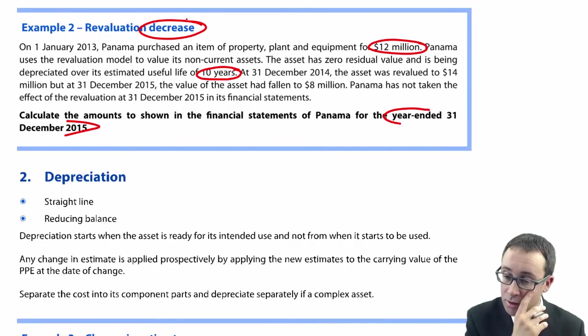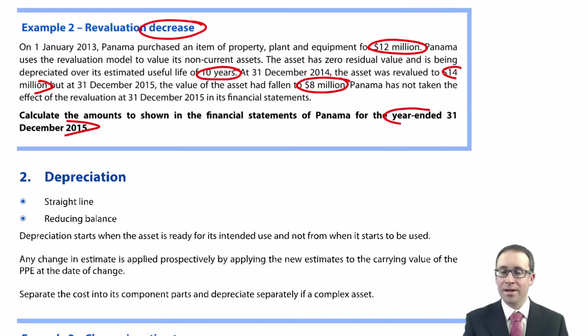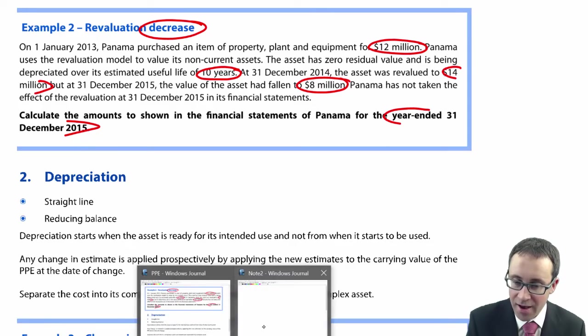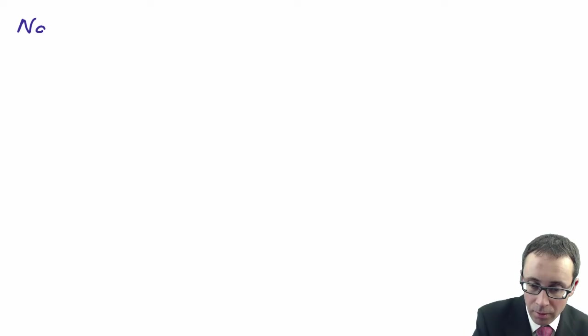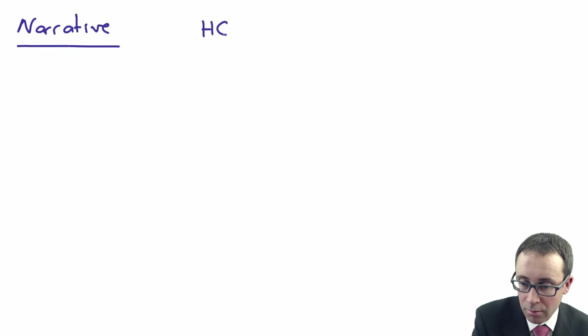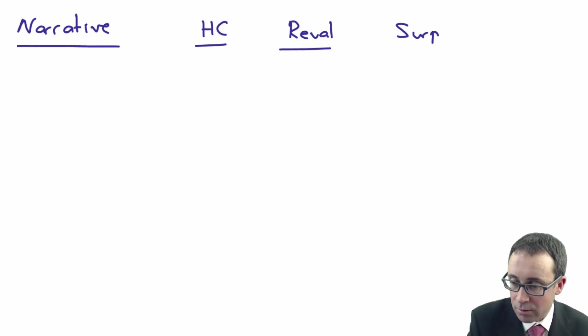Then once there was a revaluation upwards to 14 million, there was then a revaluation downwards to 8 million at the end of this year, December 2015. Panama has not taken the effect of the revaluation to 8 million in its financial statements. So it has yet to do anything. Now, in order to work out what they have to do, we have to go back right to the very start. We're going to have to go through and look at it in the same approach as the previous example.